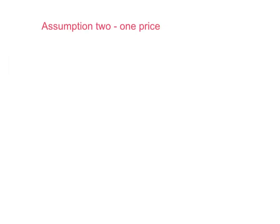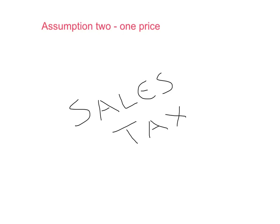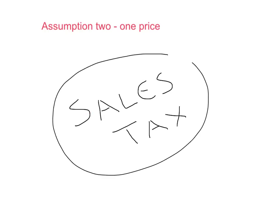Our second assumption is the one price assumption — the price the buyer pays is the price the seller receives. That might seem obvious, but it's actually not the case for many goods and services because of a goods and services tax or sales tax. Whenever there's a sales tax, the buyer pays more than the seller gets to put in their pocket. So when we use the assumption of one price, we're saying there is no sales tax. That's a good starting point, but later in this course we'll be analysing the effects of a sales tax, so we'll actually be throwing assumption two away.